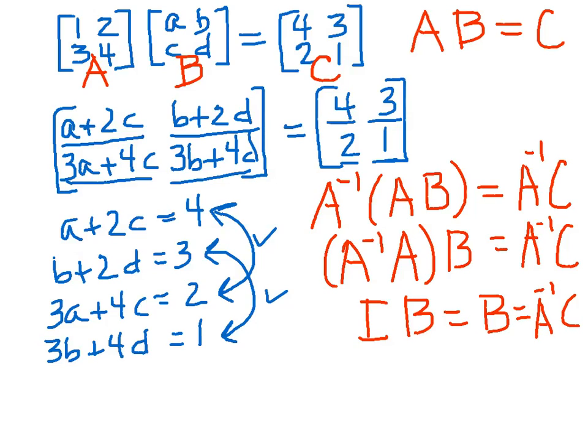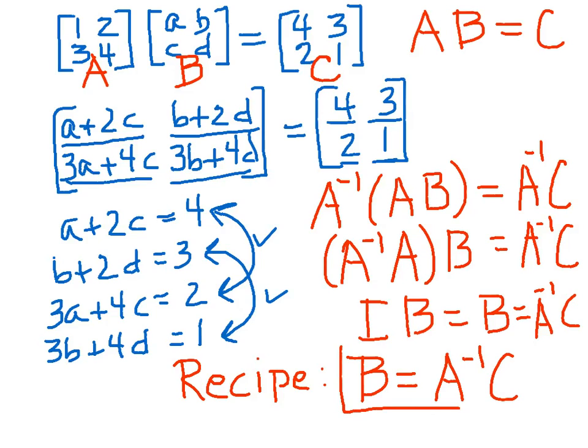So what we have here is a recipe for finding B. It says we can find B if we can find A inverse, then just multiply A inverse times C. So that's the recipe we will use to determine what the mystery entries of the matrix B are.